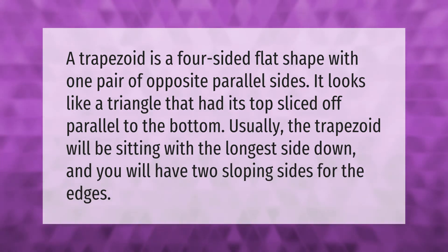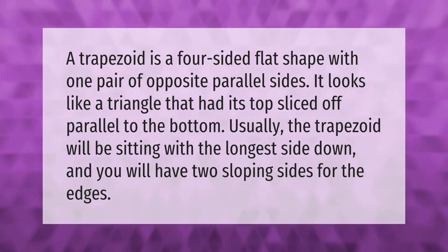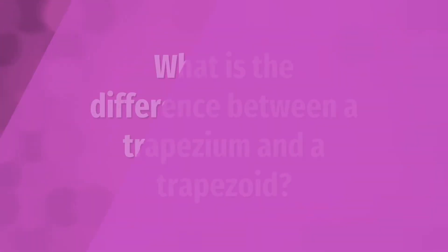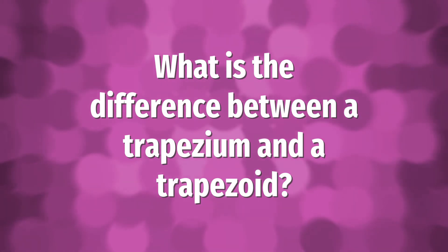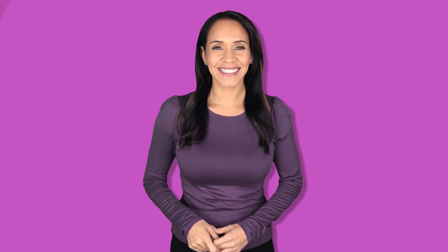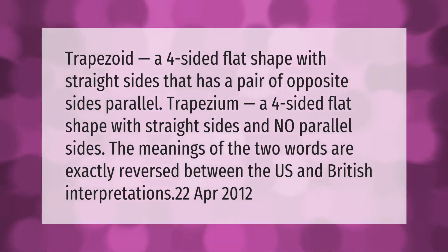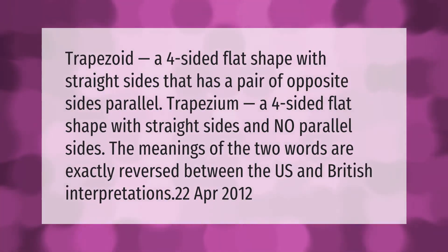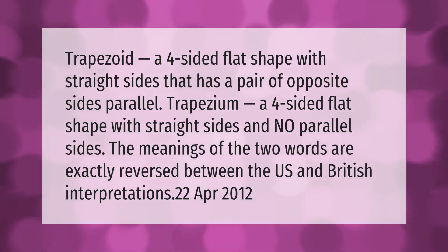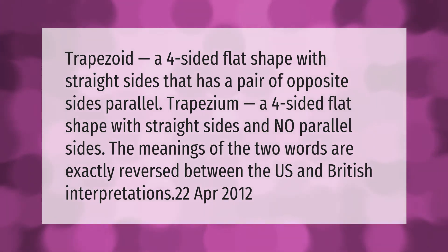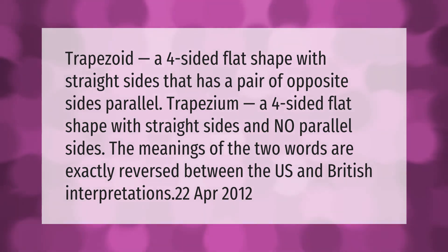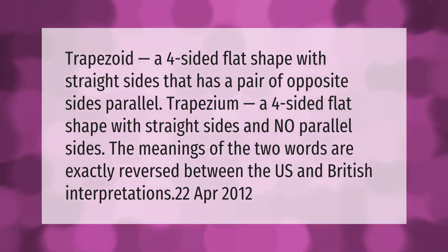Trapezoid: a four-sided flat shape with straight sides that has a pair of opposite sides parallel. Trapezium: a four-sided flat shape with straight sides and no parallel sides. The meanings of the two words are exactly reversed between the U.S. and British interpretations.